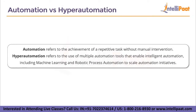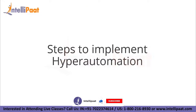The difference between automation and hyperautomation is often unclear. Automation refers to the achievement of a repetitive task without manual intervention; it typically occurs on a smaller scale, creating solutions designed to address individual or small tasks. In contrast, hyperautomation refers to the use of multiple automation tools that enable intelligent automation — including machine learning and robotic process automation — to scale already existing automation.